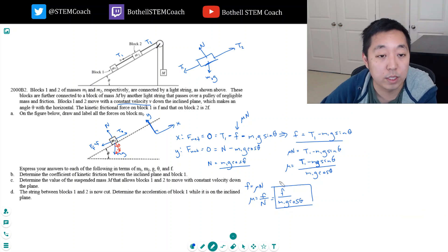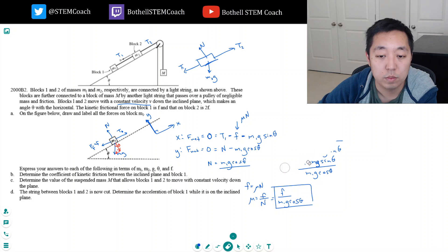Because I can put my answers in terms of F and N is M1G cosine theta. Okay, that's my answer for B. So it was a lot simpler than what I was doing before. Let's erase some of this just to make room here.